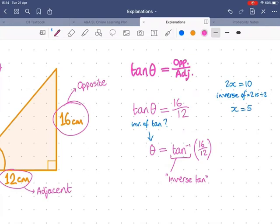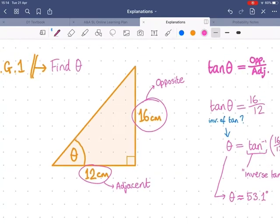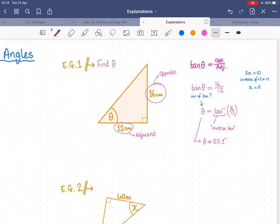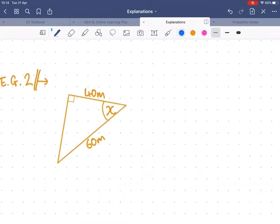So inverse tan of 16 over 12, or 1.3 recurring, whatever you want. We're not really going to learn any of these, or maybe a few later on, but no one should be expected to learn this one. Inverse tan of 16 over 12, you just type it into your calculator and it'll tell you that the angle theta is roughly 53.1 degrees. And you will always check here, does that look like a sensible answer? Yes, I'd say it does.